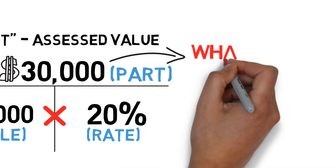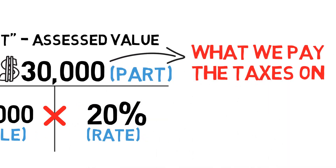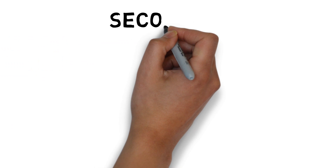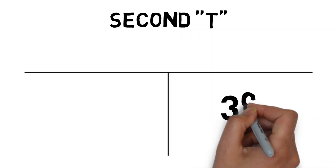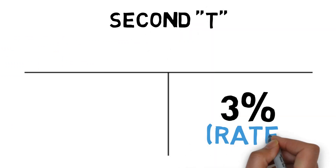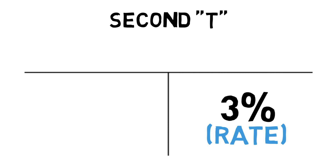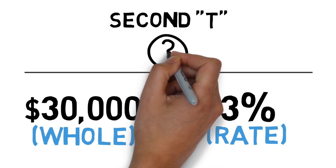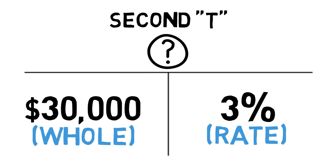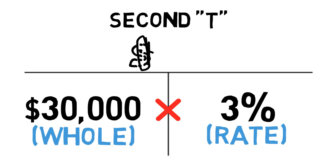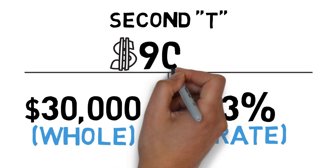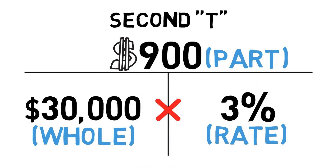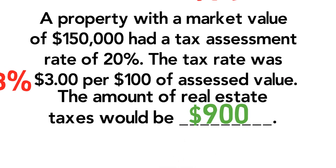The assessed value is what we pay taxes on. In our second T, the tax percentage of three percent goes on the bottom right, and the assessed value of thirty thousand is the whole amount on the bottom left. Multiplying straight across: thirty thousand times three percent gives us the actual taxes of nine hundred dollars on this property. Nine hundred dollars is our answer.